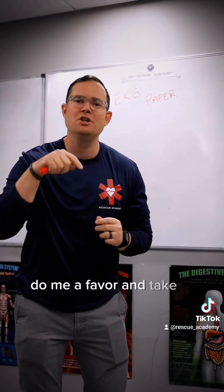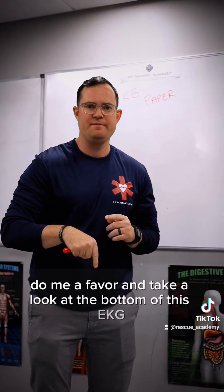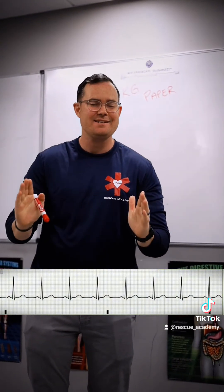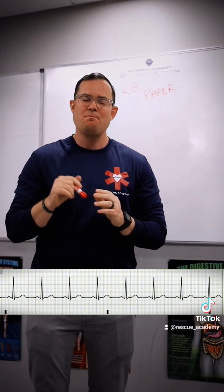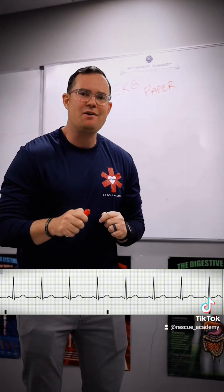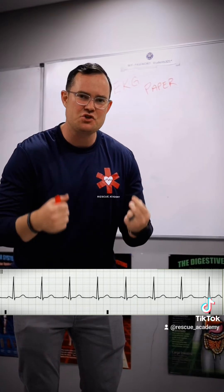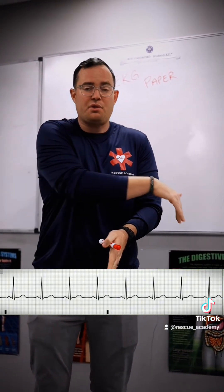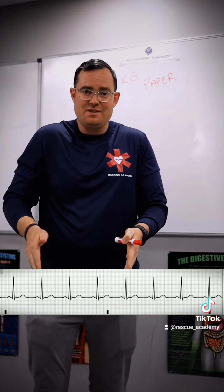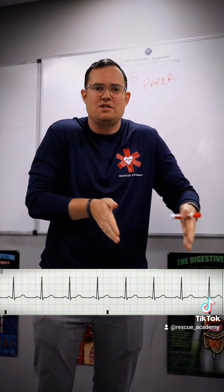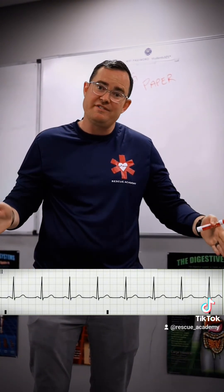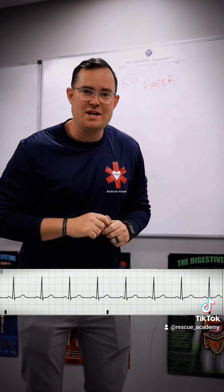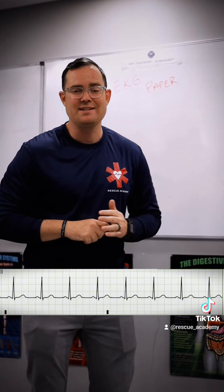Now take a look at the bottom of this EKG. Do you see the lines that signify three seconds? What we're trying to find is a six-second strip. We need to see three lines to signify two three-second sides, for a total of six seconds on a strip. Can you tell that it's a six-second strip?